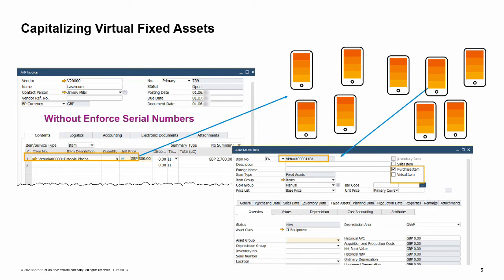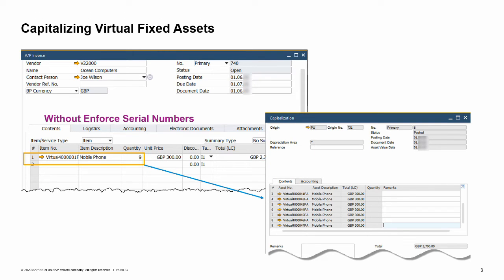In our example, when OEC Computers enter a quantity of 9 mobile phones in the AP invoice row, the system automatically creates 9 asset master data records, one for each mobile phone. The information in the asset master data of the virtual fixed asset is copied to the newly created asset master data, except the virtual item checkbox which stays unselected. The assets created are regular fixed assets with monetary values. The virtual item functions as a template and therefore will not have any values under the fixed assets tab. A capitalization document including the created assets is issued automatically, as well as a journal entry against the asset account. Note that you can include multiple virtual fixed assets in the same AP invoice, but you cannot include both virtual fixed assets and normal fixed assets in the same AP invoice.